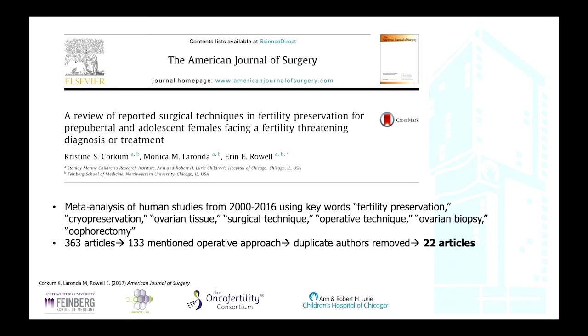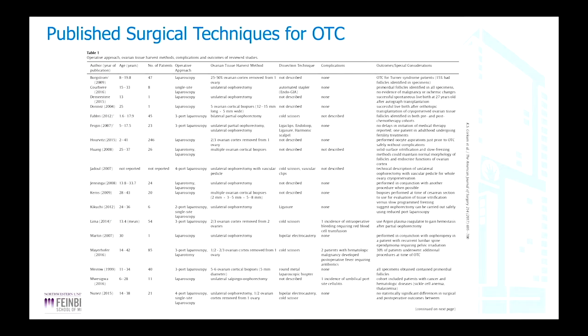To look into this problem further, several years ago we decided to do a meta-analysis of all the surgical techniques. We intended this to be pediatric focused but started by looking at surgical techniques across the board as reported in the literature. We found 363 articles, of which 133 mentioned specific details of operative approach. Once we removed duplicate authors, we were left with 22 articles that we could examine for details of operation. I'm going to show part of the table — 18 of the 22 — as it goes over two pages of the publication.